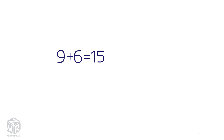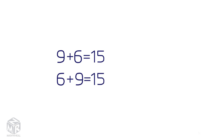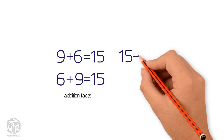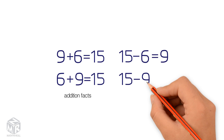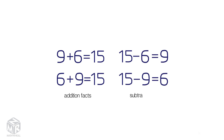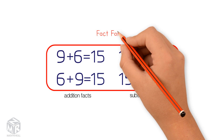Let's try another example. 9 plus 6 equals 15. 9 and 6 are the addends and 15 is the sum. We can change the order of the addends and the sum will remain the same. 6 plus 9 is also equal to 15. These are the addition facts. Now let's write down the subtraction facts. We subtract one part from the whole to get the other part. 15 minus 6 equals 9. And 15 minus 9 equals 6. These are the subtraction facts. These two addition facts and two subtraction facts make the fact family.